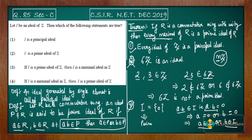The fourth statement says: if I is a maximal ideal in Z, then I is a prime ideal. This statement follows directly from the theorem we mentioned — Z is a commutative ring with unity, so every maximal ideal is a prime ideal. Therefore the fourth statement is correct.